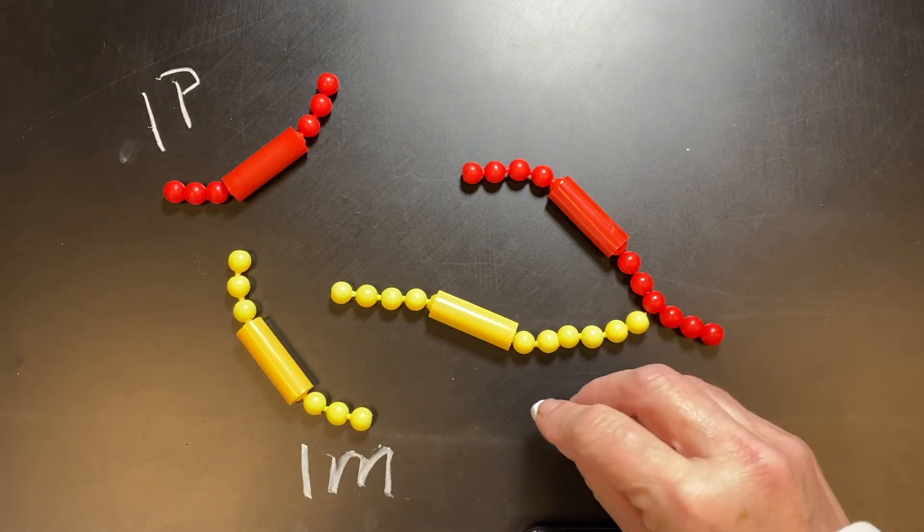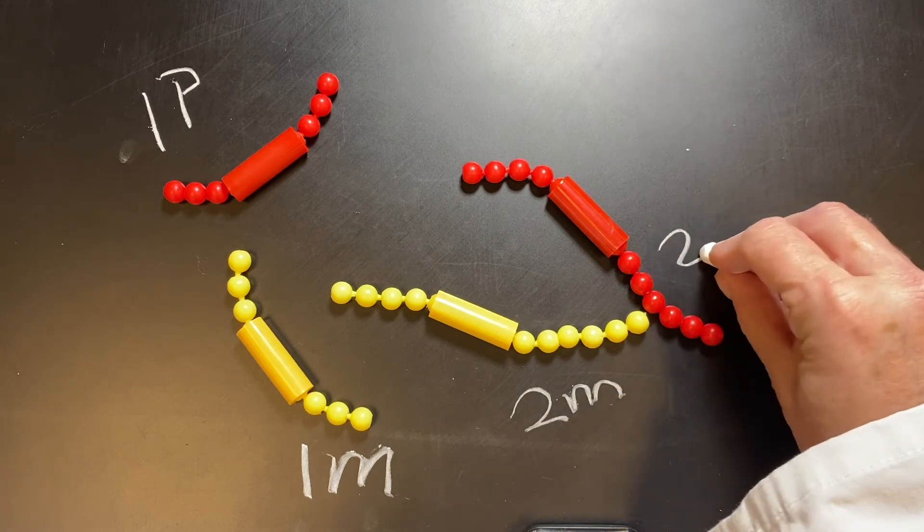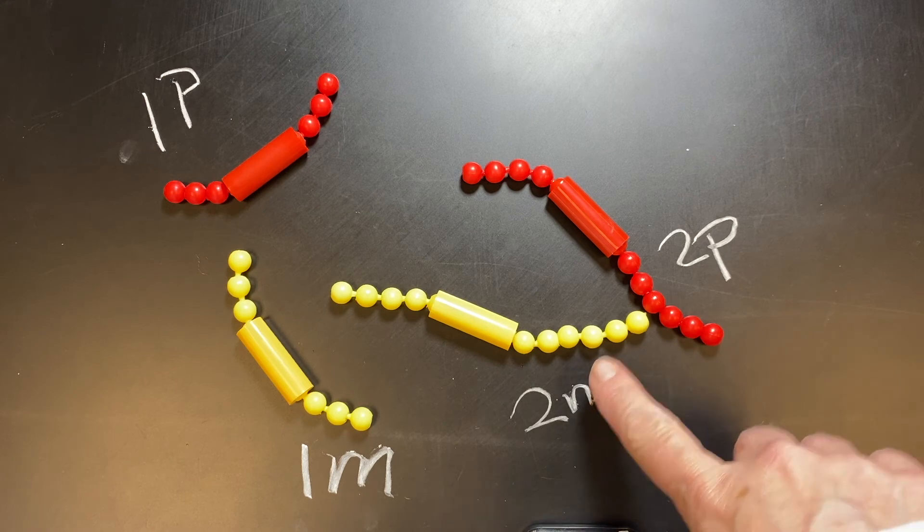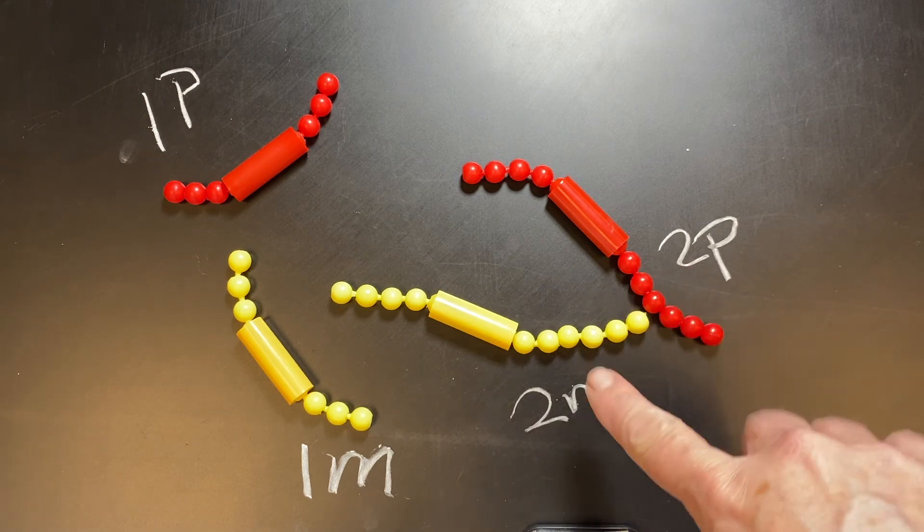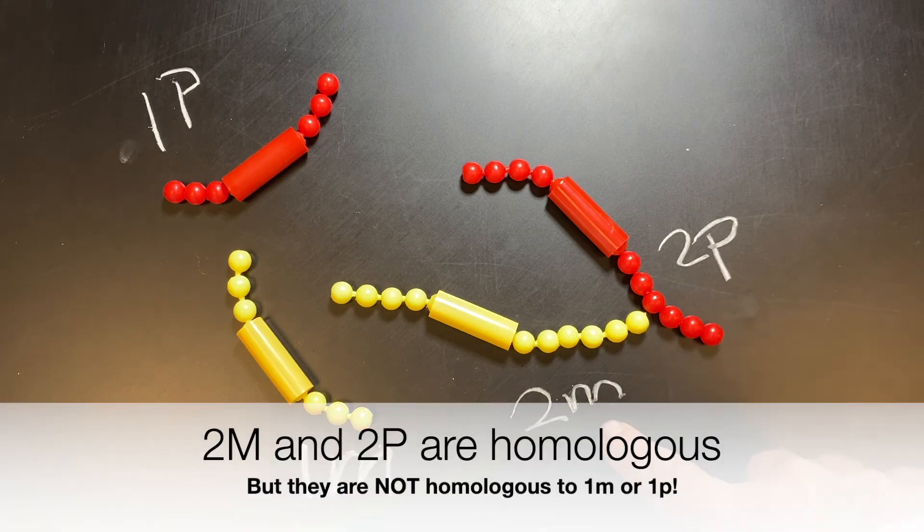These two chromosomes here are named chromosome 2. This one is chromosome 2M, and this one is chromosome 2P. Again, mom and pop, but these two are homologous to each other, so 2M is homologous to 2P.